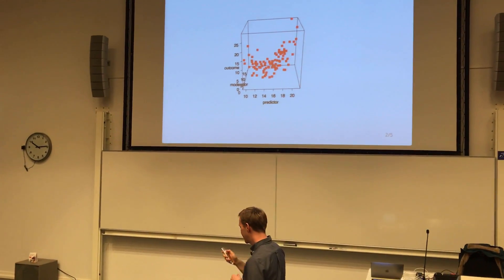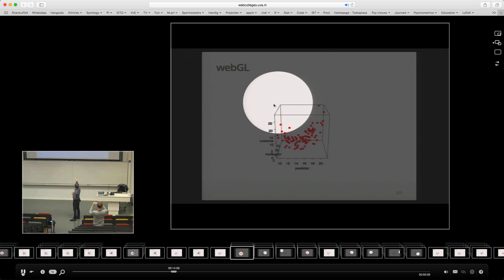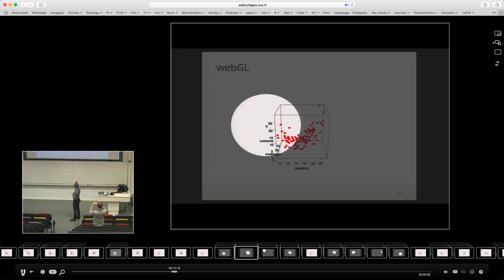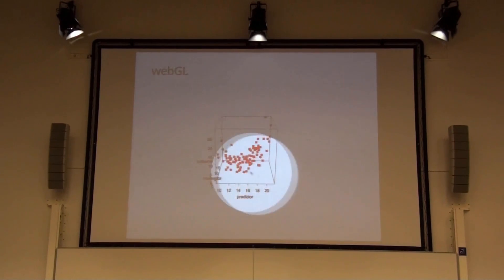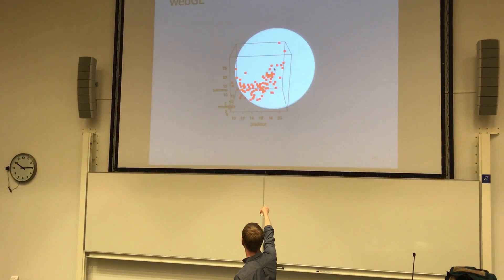But what it also does is it displays a spotlight on the Beamer. So this is a digital projection of the spotlight on the computer screen, which is projected on the Beamer. And you can use it to emphasize things on your presentation.